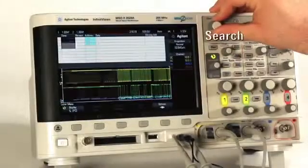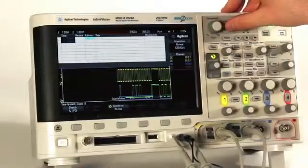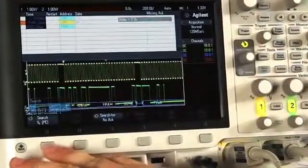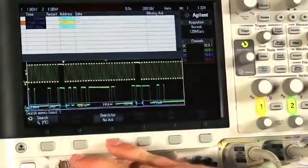Let's now perform an automatic search to find every occurrence of a missing acknowledge. We will then automatically navigate to each of these occurrences. Press the Search front panel key and tap the Search for soft key and select Missing Acknowledge as our search criteria.